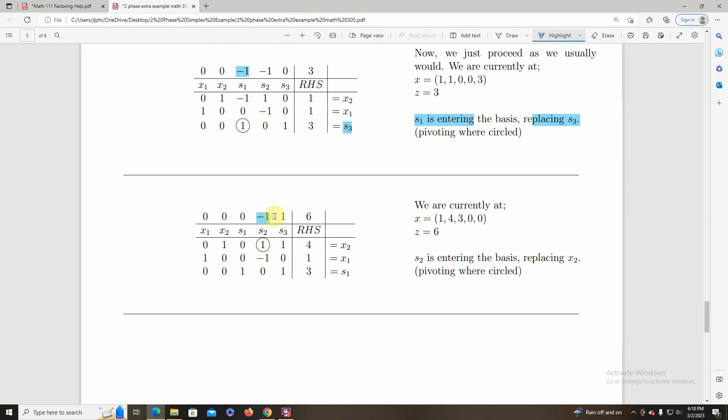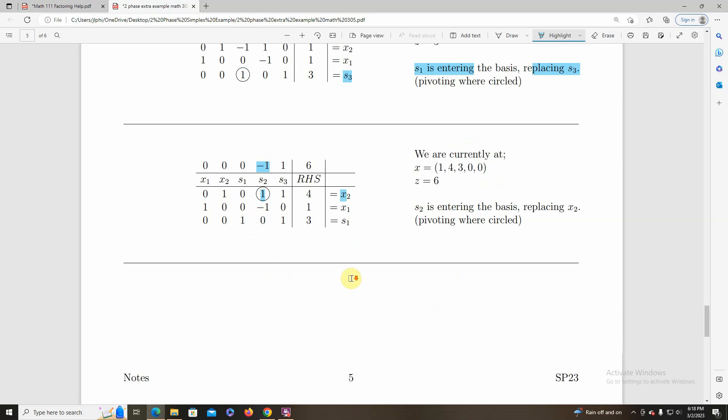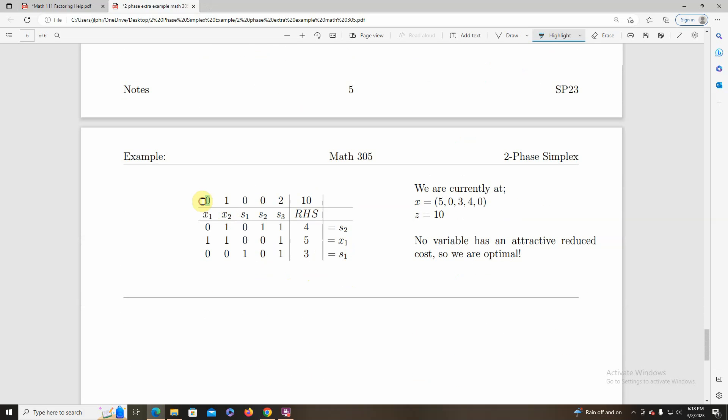Most are the only attractive. Ratio test. So X2 will leave. Make the pivot. Now look. Nothing is attractive. No variable is attractive. That means we're optimal. Yay! And here's where we're optimal at. This point. X1 is 5. X2 is not in the basis, so it's zero. Slack one and slack two are three and four, and slack three is not in the basis.